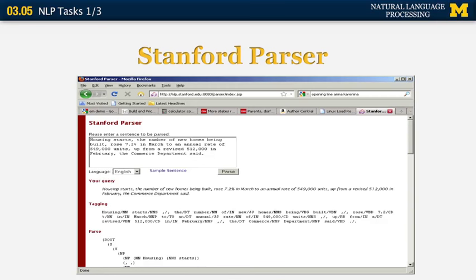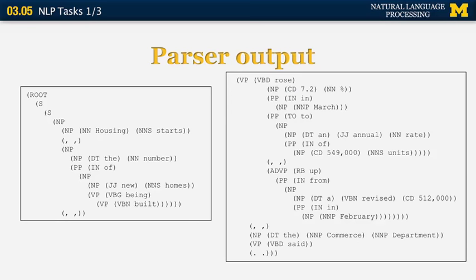One example of an external tool you can use for parsing is the well-known Stanford parser. There are many others, but the Stanford parser comes with a very nice demo. You can go to the URL and type in a sentence, and you will get as output a parse tree as well as a part-of-speech tag sequence for all the words in the sentence, as shown in this example.